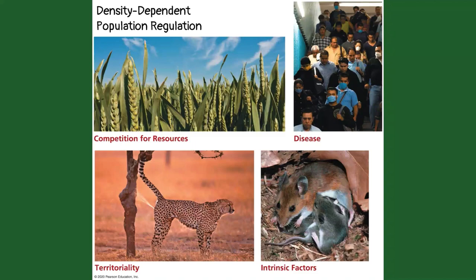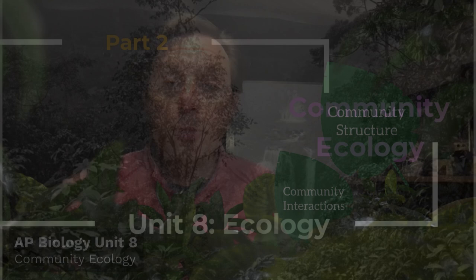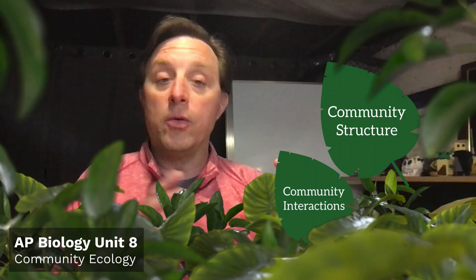That is the end of part one on populations. In part two, we'll start adding more species and talk about community ecology — what happens when different populations and different species live and interact with each other, and how these communities can be structured.